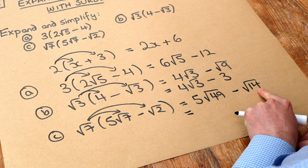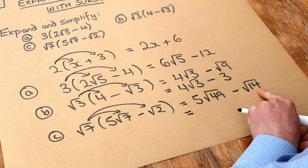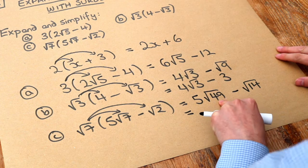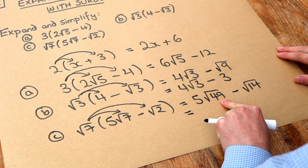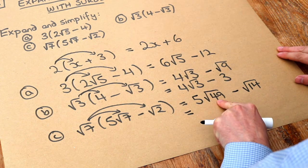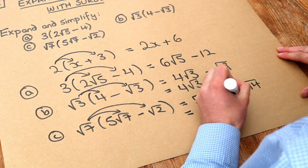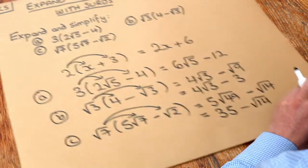Now this doesn't simplify because there's no square factors in 14. Remember that's when you know if you can simplify a surd or not. But the square root of 49, well 49 is a square number. Its square root is 7. And 5 lots of 7, 5 times 7 is 35. So we get 35 minus root 14. And that's the final answer.